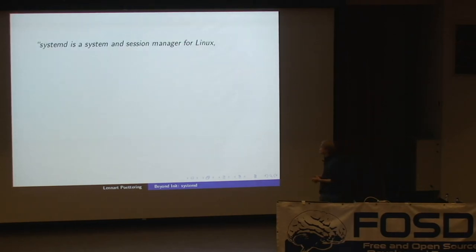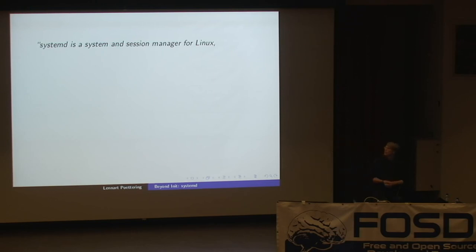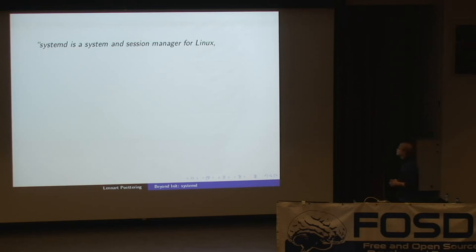This slide contains the original description of System D from the System D website. It's a long paragraph. This is the first half sentence of it. It's a paragraph with a lot of information in very, very little room. It's not necessarily easy to understand, and that's why we're going to parse it a little bit so that everybody understands what is meant by this. The first half sentence reads: System D is a system and session manager for Linux.